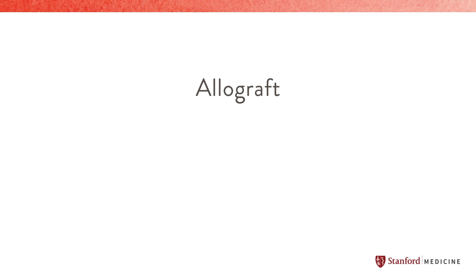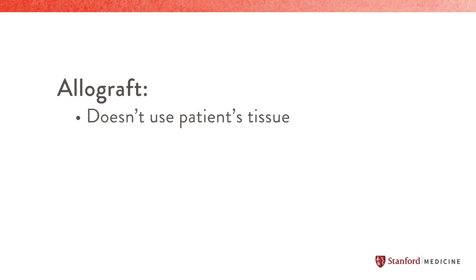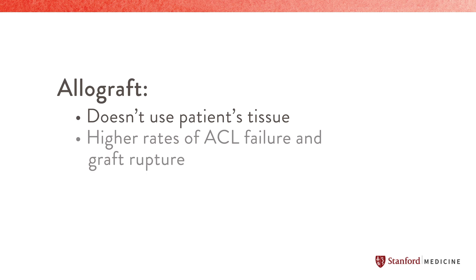The allograft uses tissue from a cadaver. It has some advantages in that it doesn't use any of the patient's own tissue, avoiding problems associated with harvesting from the kneecap or hamstring tendons. However, several studies have shown this graft has a much higher rate of ACL failure and graft rupture. For this reason, many surgeons now avoid using this graft in younger or more active patients.